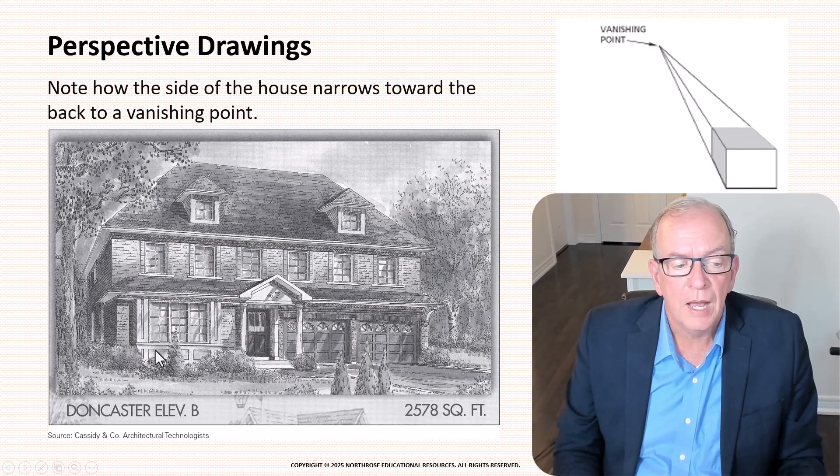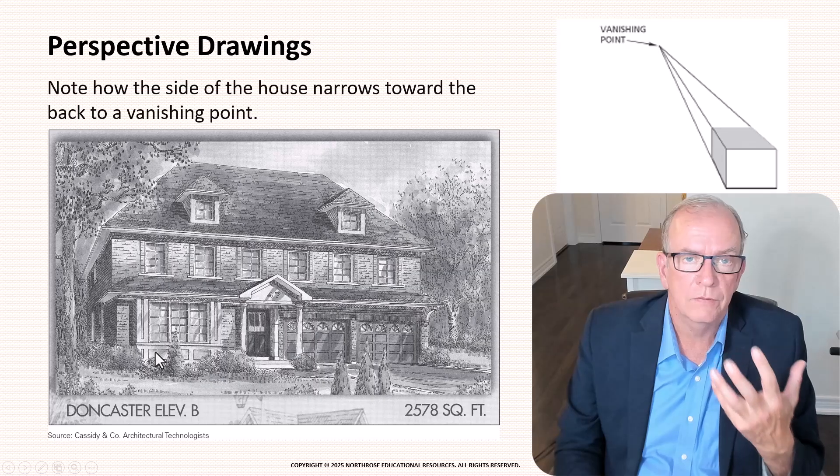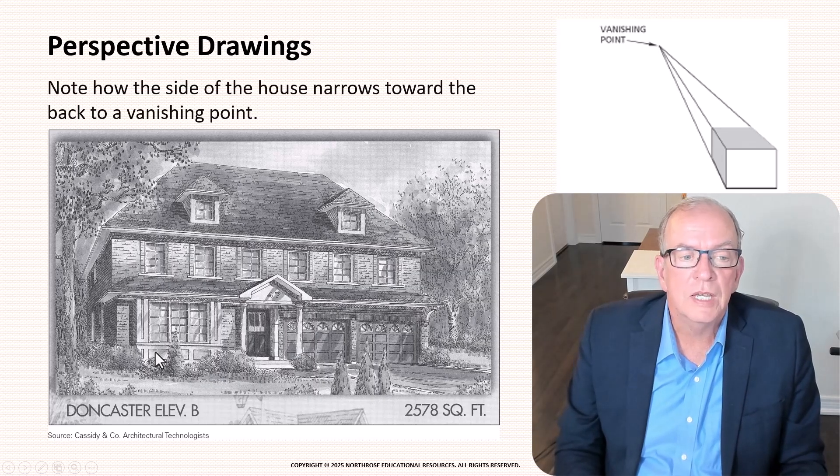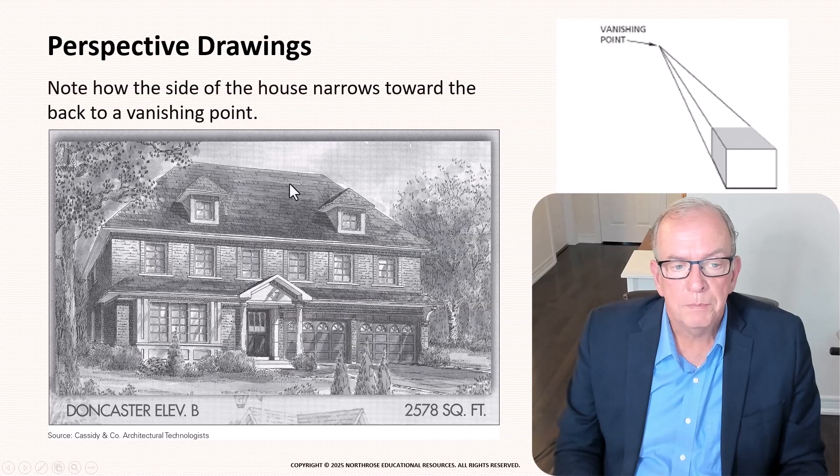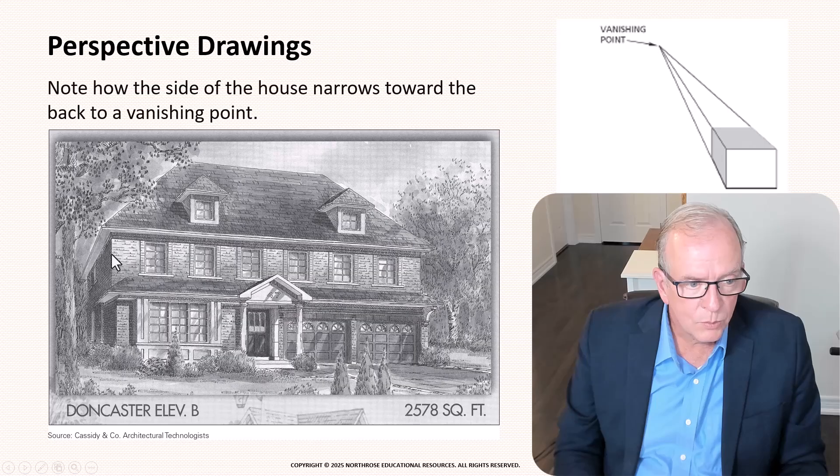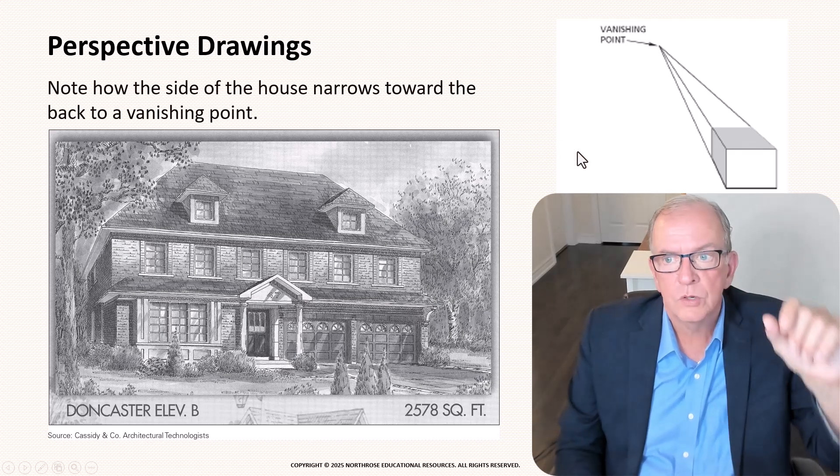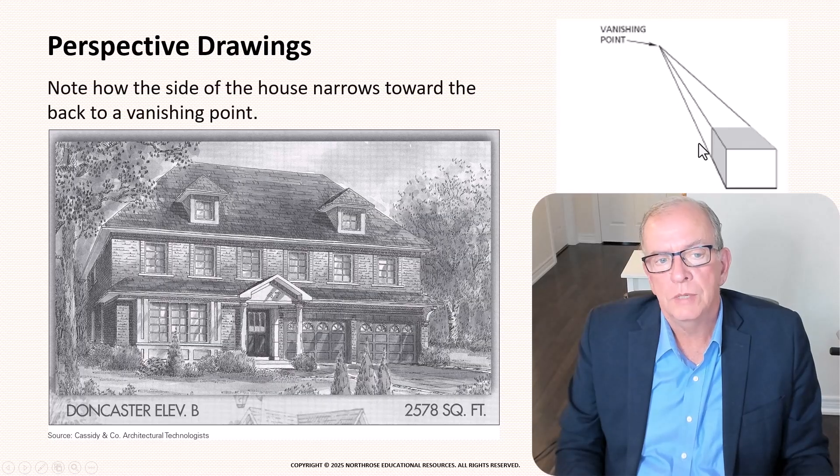So we have different names on the different houses just so that it gives it sort of distinction. Usually developers will do that and so this would be a perspective drawing. You can see the front but if you notice that going down the side here you'll notice that the front of the house seems taller than the back of the house and that's because it's going to a vanishing point.